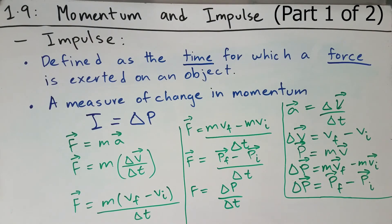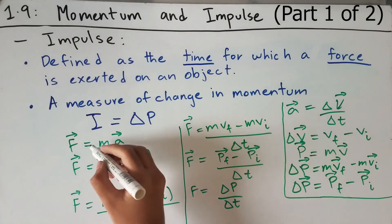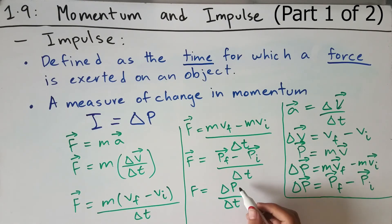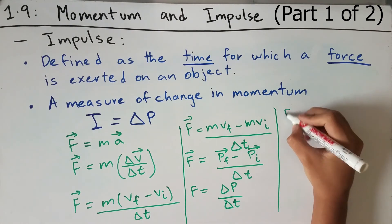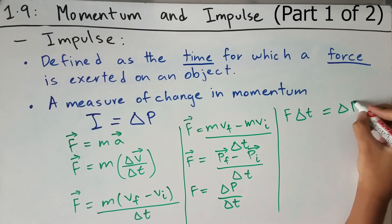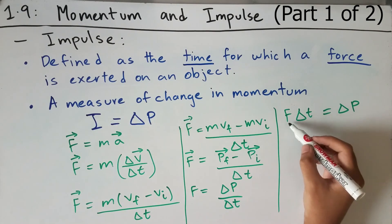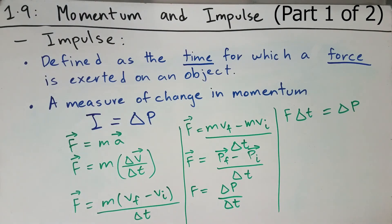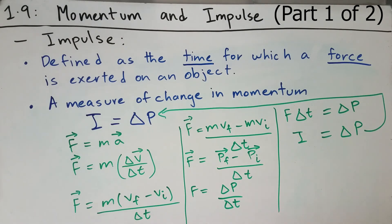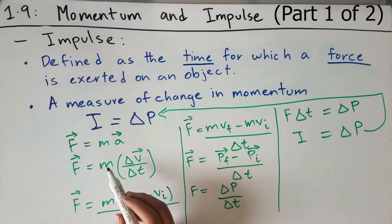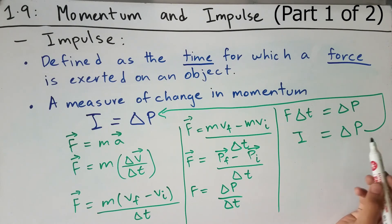This definition of Newton's second law redefines what F equals ma means: force is a measure of the rate at which momentum changes. And if we multiply each side of the equation by delta t, we get force times delta t equals delta p. This is simply impulse, because force times delta t equals impulse, and impulse equals delta p. So we've arrived at the first equation, confirming that impulse equals the change in momentum of an object.